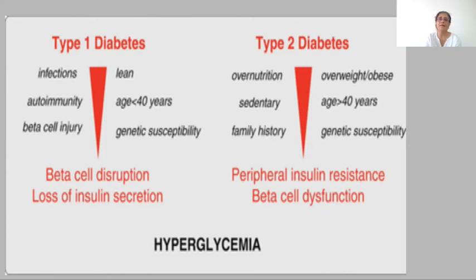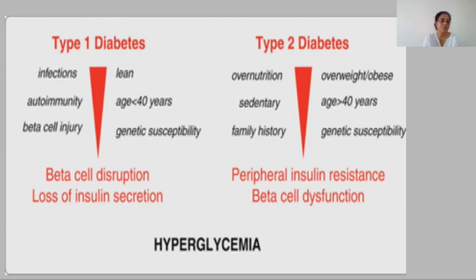Type 2 diabetes is associated with over-nutrition, obesity, and overweight — which is a stage just before obesity. There is also a sedentary lifestyle; the common excuse is lack of time. Family history plays a role, but epigenetics is important here — you may carry the genes of a disease, but for those genes to manifest, the appropriate conditions must be present. If you do not give the genes those conditions, the disease will not be allowed to manifest.